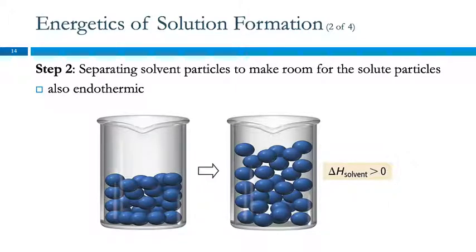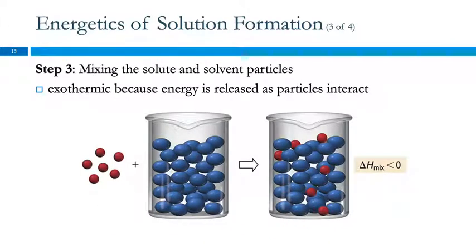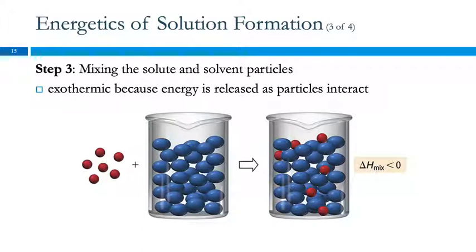So far, it doesn't look very good for forming a solution. The third step is mixing these separated particles together. This process is going to be exothermic, because now we have forces of attraction between the solvent and the solute particles. Depending on what kind of particles they are, it might be very weak — but even a very polar hydrogen-bonding molecule like water has dispersion forces and can interact with something like hexane. We call this delta H mix, and it's going to be less than zero.